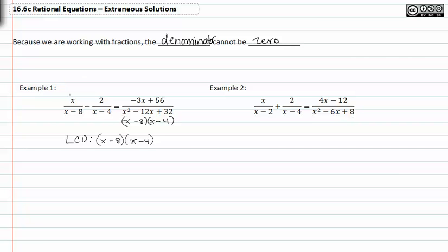I'll go through and multiply each term by x minus eight, x minus four. Now that I've multiplied through, I can divide out the common factors. Now that they've divided out,